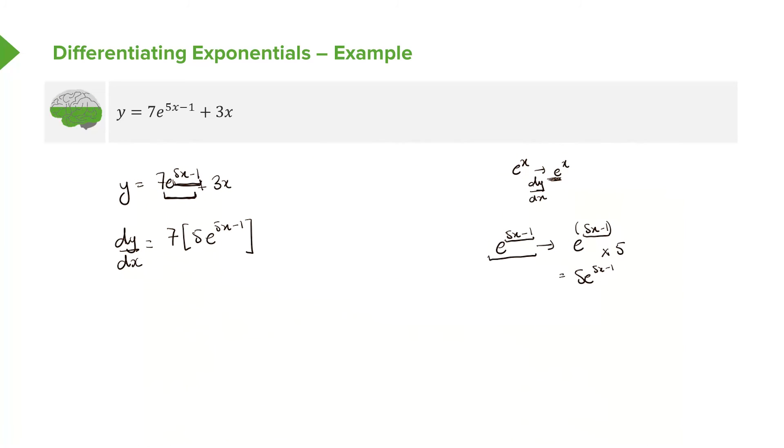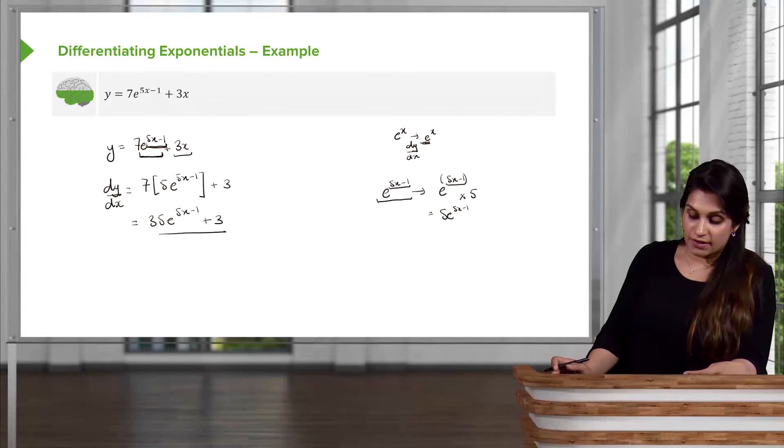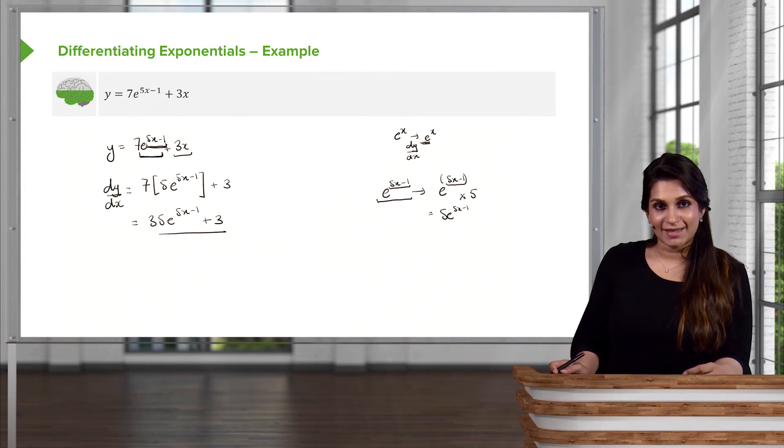e^(5x-1). And then 3x, we're experts at this. So 3x just differentiates to 3. Let's just tidy this up. 7 times 5 gives you 35, e^(5x-1) + 3. And that is your derivative of 7e^(5x-1) + 3x.